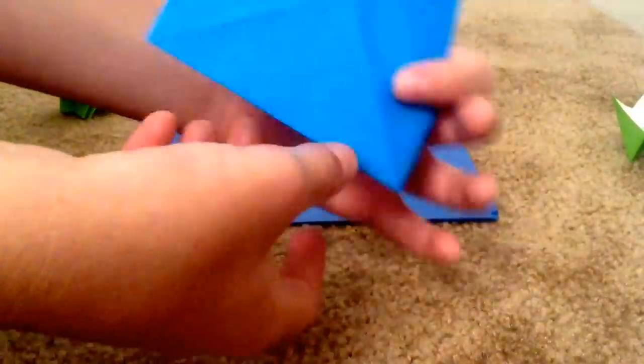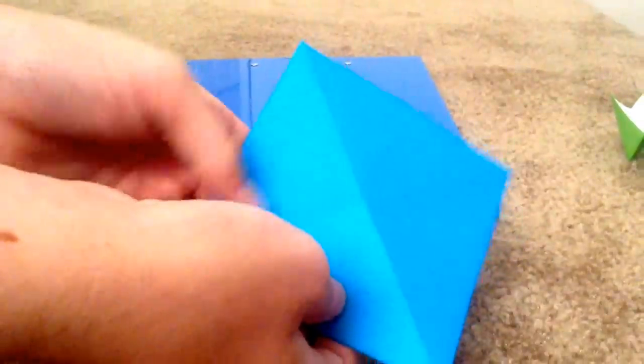So you get a square with an X. Flip it over and do the same thing on the other side.